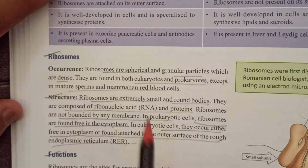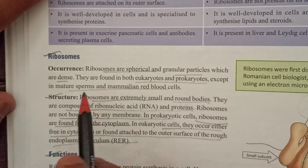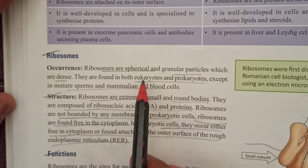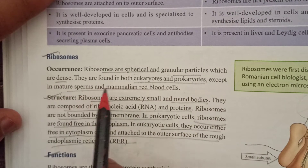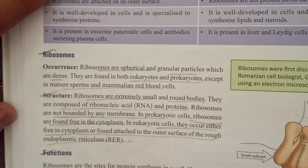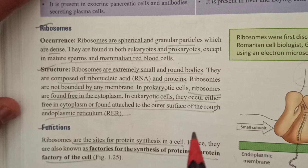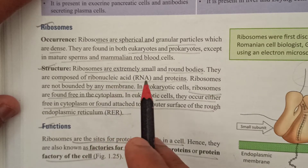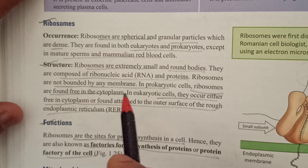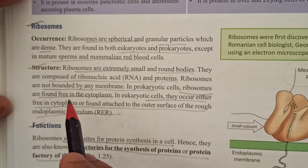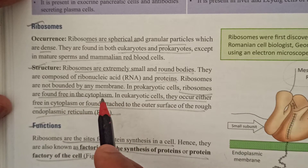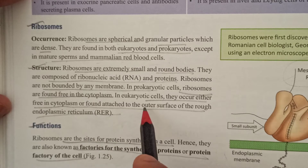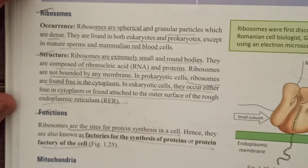Ribosomes are spherical, dense, granular particles. They are extremely small and can only be seen under an electron microscope. They are made of RNA and protein. Ribosomes are found either free in the cytoplasm or on the outer surface of the rough endoplasmic reticulum.